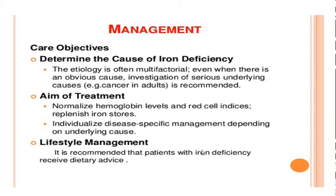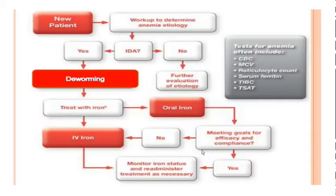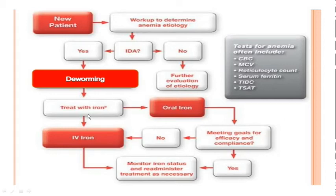The lifestyle management is obviously a proper dietary advice. Any new patient you need to have a workup for the anemia profile. If it is iron deficiency anemia, we can do something called deworming, which is very important in the Indian scenario. Then we can move on to iron therapy in the form of IV iron or oral iron. If it is not iron deficiency anemia, obviously we have to go for further evaluations.